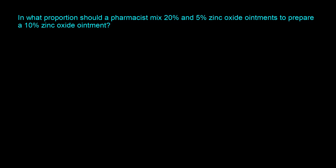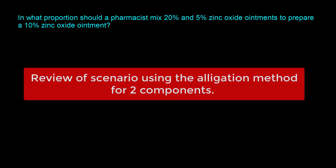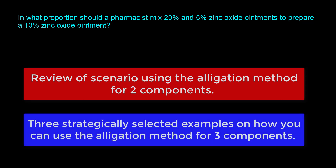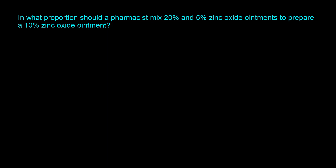When it comes to the allegation method, you commonly see scenarios where you apply it to two components. I have excellent videos on those, so I'll put links in the description. But in this video, I'll start off by reviewing a scenario where you use the allegation method for two components, and then we'll look at three strategically selected examples on how you can use the allegation method for three components.